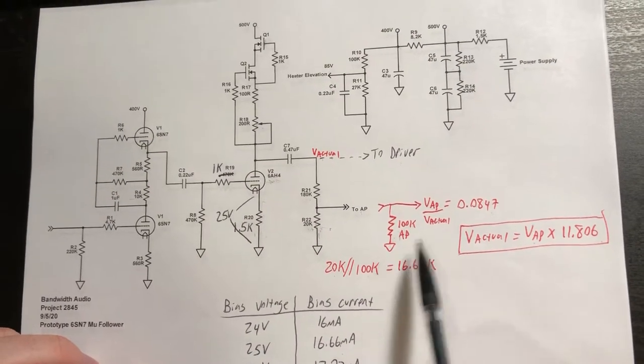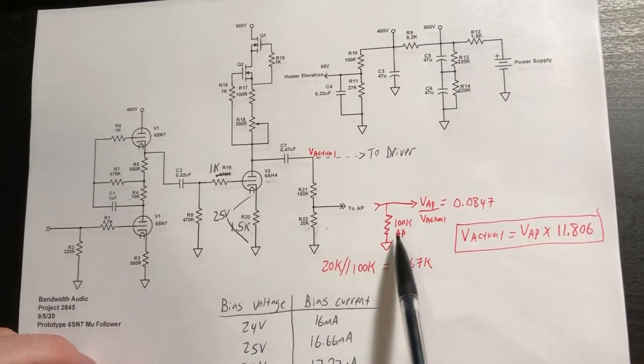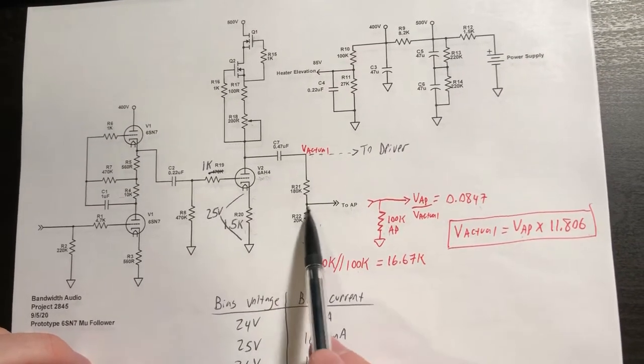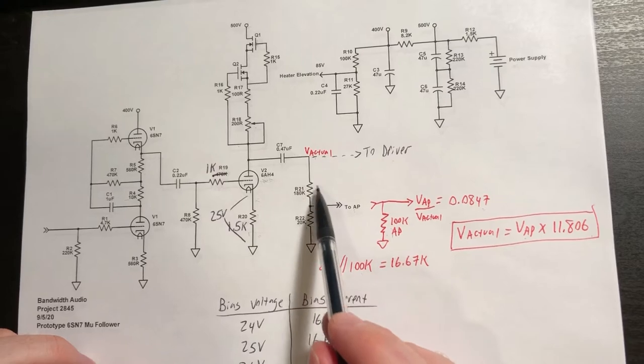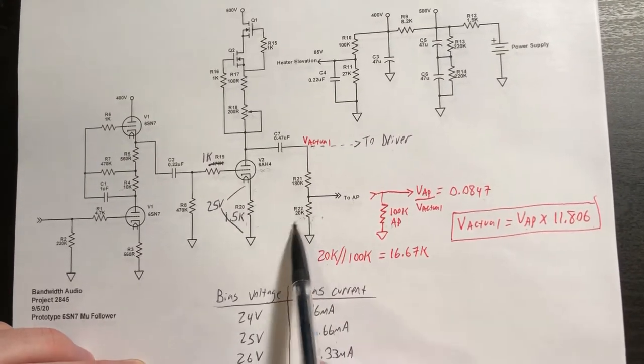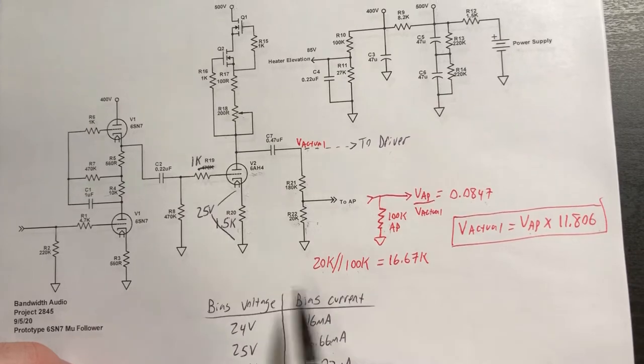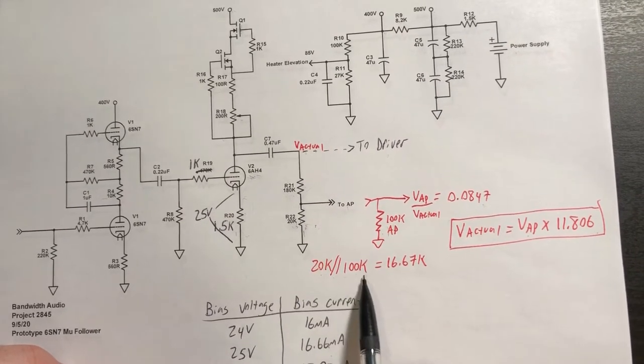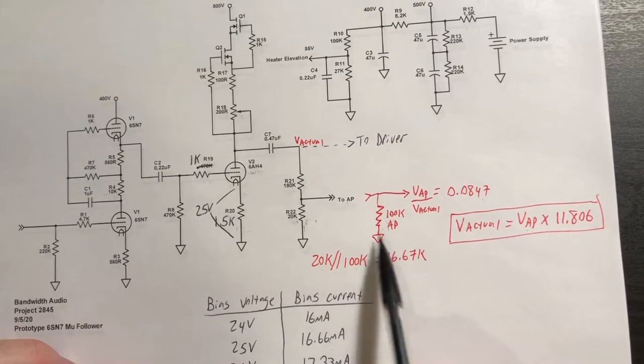There is a caveat into doing that. Because the AP is only a 100 kOhm input impedance, this lower voltage divider, although it's ideally a 10 to 1 with a 1.8 k on top and a 20 k down low, the parallel combination of this 20 kOhm resistor and this 100 kOhm input impedance to the AP...